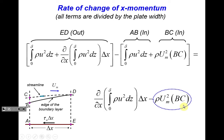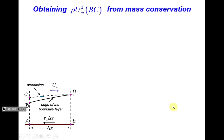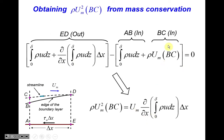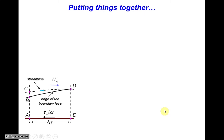To find the BC term, we apply mass conservation. The efflux of mass through AB (integral of velocity over AB) plus influx through BC must equal the mass leaving through ED — the balance must be zero by the conservation law. Mass leaving through ED is defined similarly to momentum flux: influx plus the change along δx. Through algebra from this mass conservation equation, we can express BC in terms of the external velocity and the integral of the boundary layer velocity.